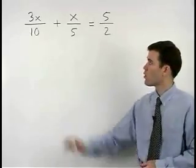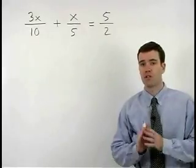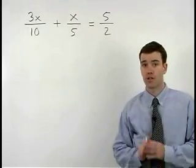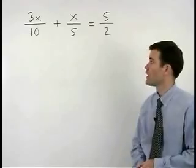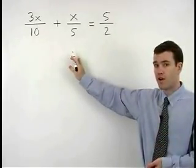When solving an equation that involves fractions, our first step is to get rid of those fractions as soon as possible by multiplying both sides of the equation by the common denominator for those fractions.